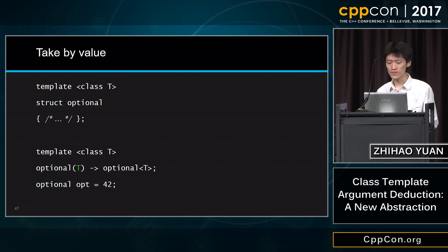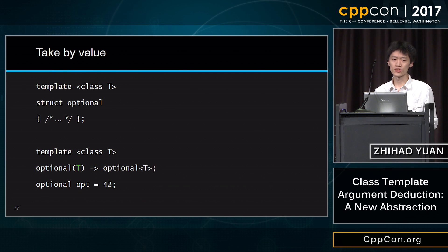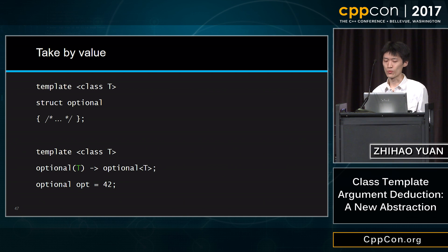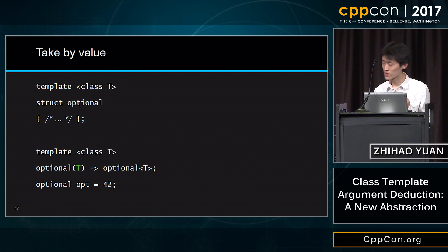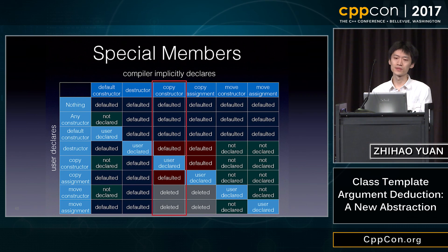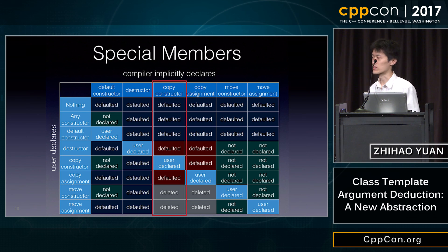This copy deduction candidate imposes a new invented constructor `C(C)` where `C` is the class template name. Not just the language — the library also uses it whenever possible. We use this 'take by value' style on `pair`, `tuple`, `array`, and all the tuple-like types.